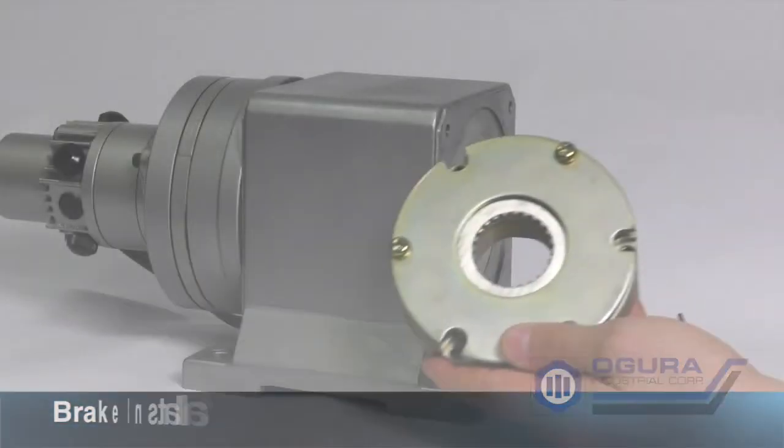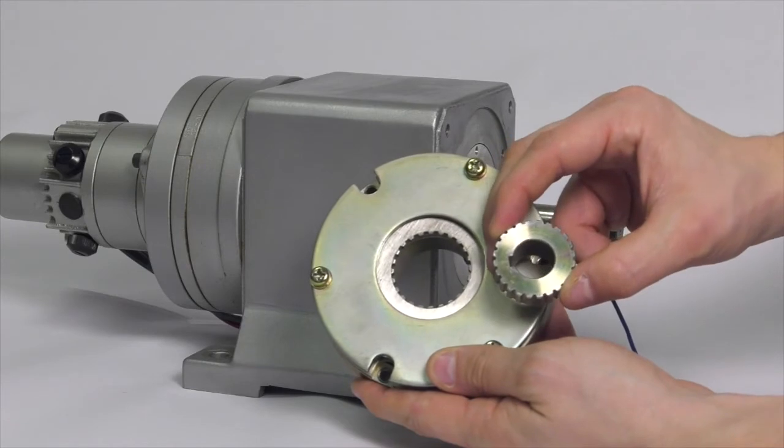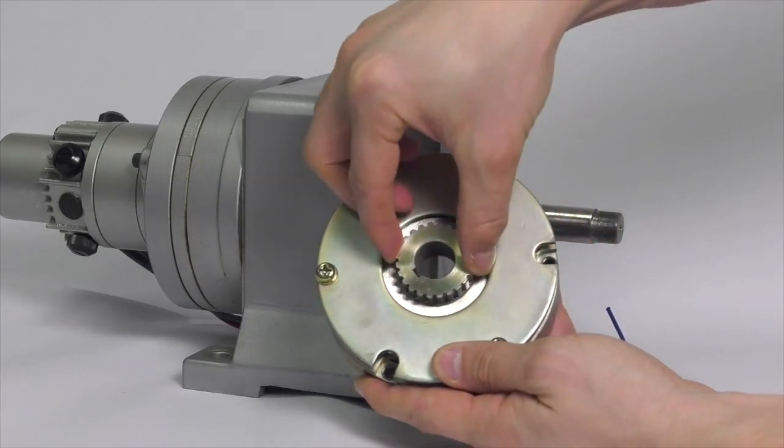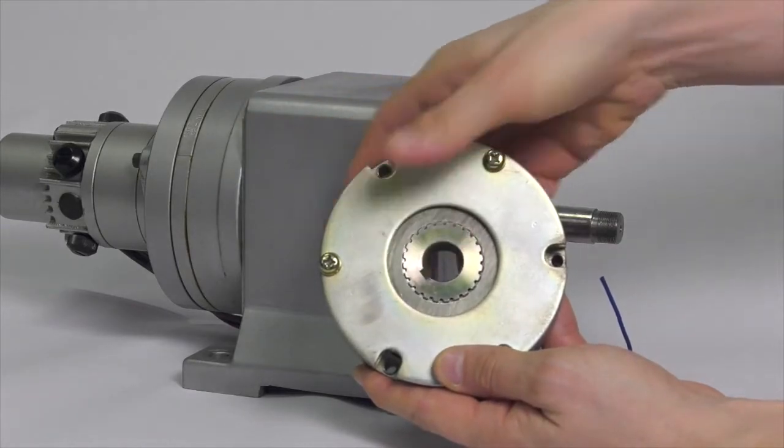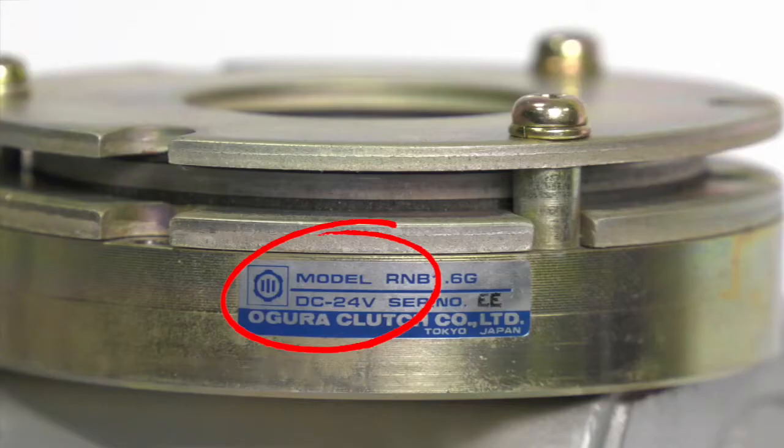For smaller spring applied brakes, insert the hub into the brake and then temporarily connect the leads to your power supply, making sure the connections are properly insulated. The voltage going to the brake should be at the rated voltage shown on the label.